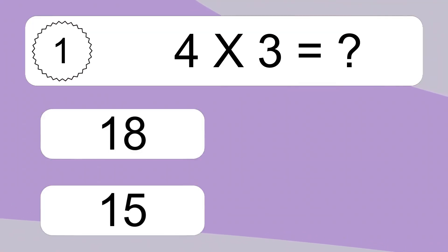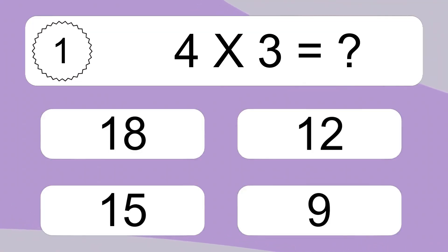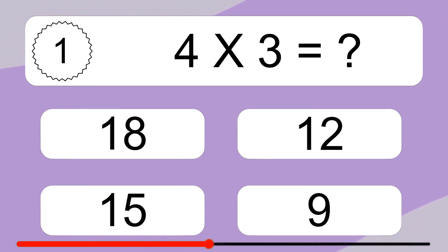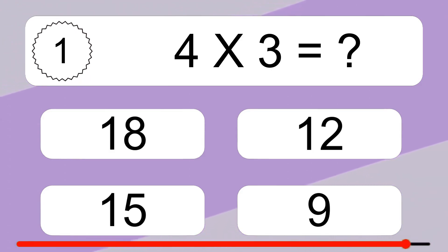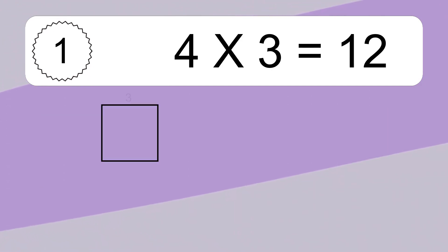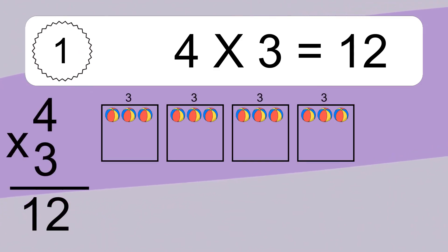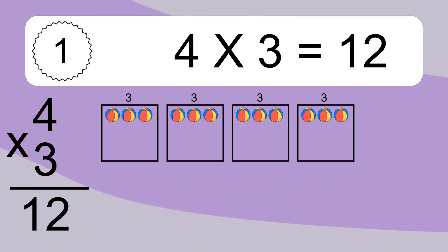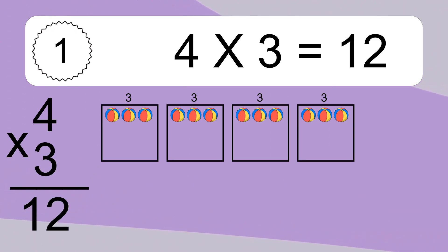4 times 3 equals what? 4 times 3 equals 12. We have 4 boxes, and each box has 3 colorful balls inside. If you count all the balls in all the boxes together, you will have 4 times 3 balls. This equals 12 balls.